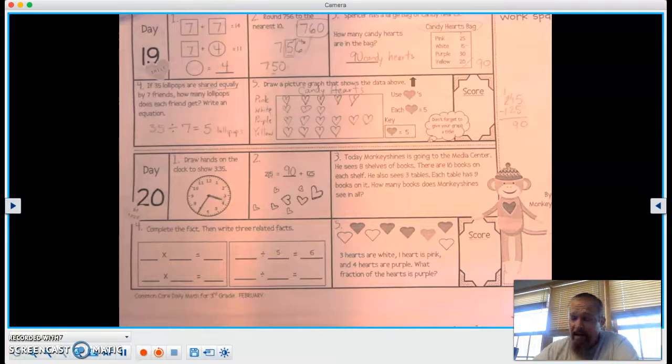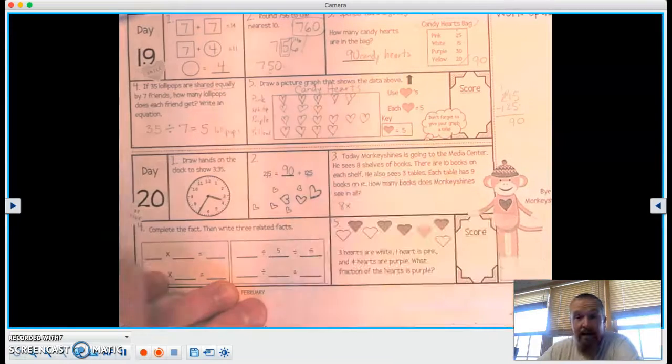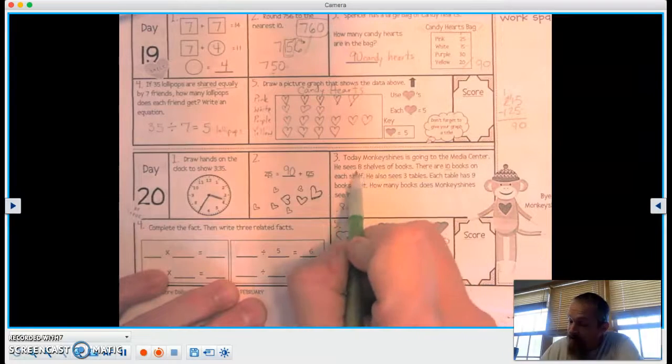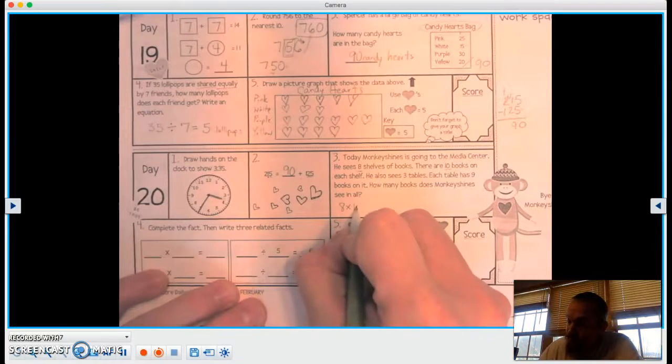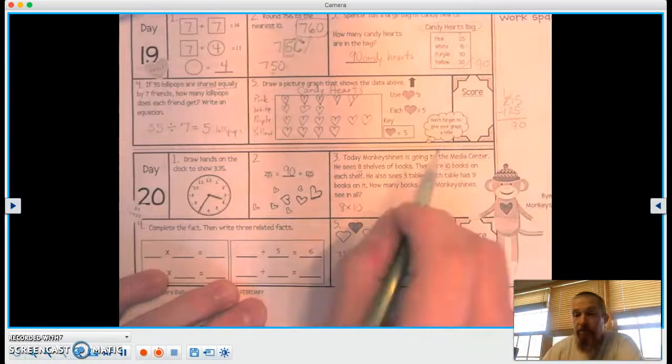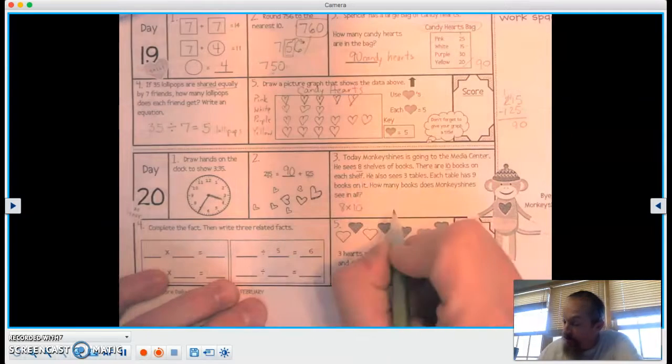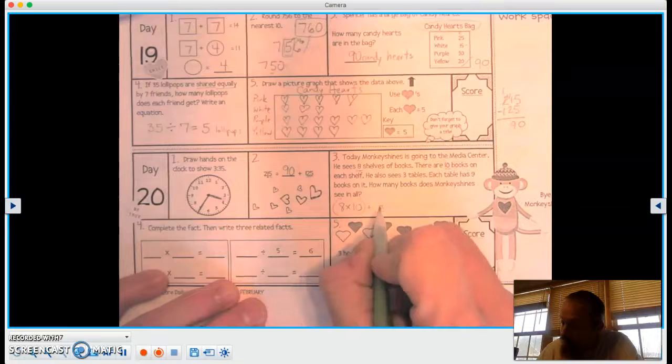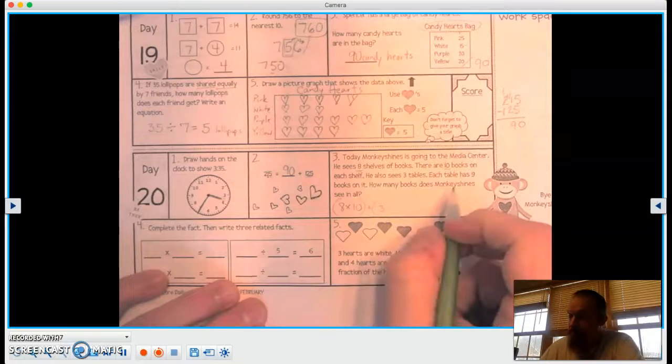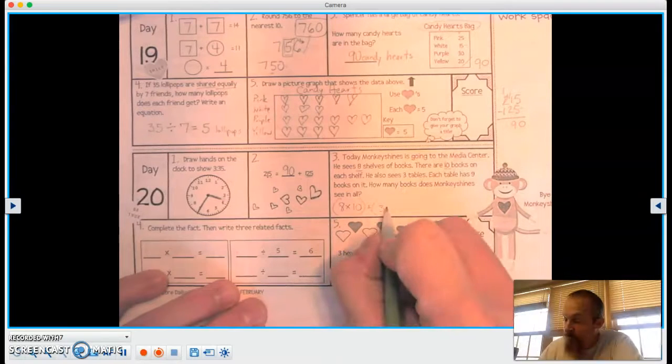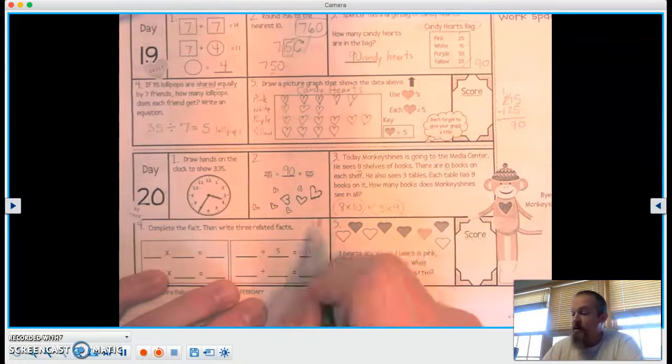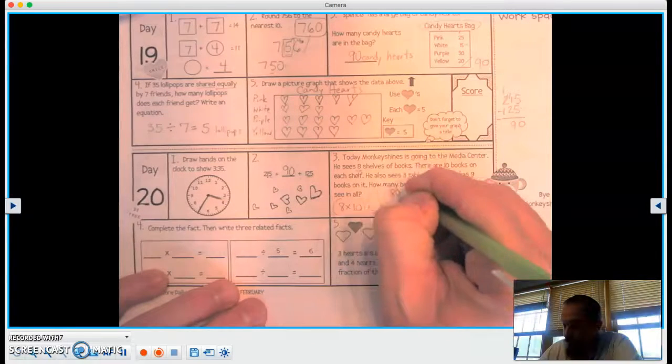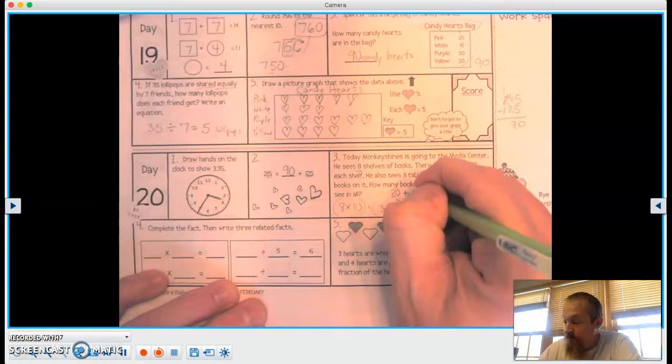8 shelves of books times 10 books on each shelf, right? And then we're going to add that to 3 tables. So we're going to do this one. And then we're going to do 3 tables. Each table has 9 books, so times 9. So again, 8 times 10 is 80. And then 3 times 9 is 27.